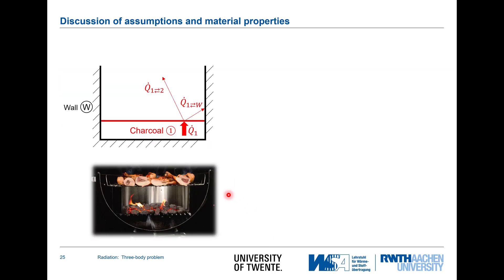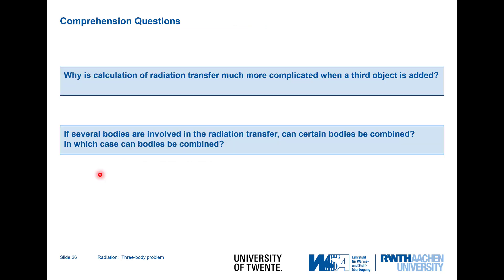The discussion of the assumptions we have taken is: what are the wall properties that are changing? Should it be more reflective? Should it be a black object? Does the surface shape play a role? I think I have discussed that and you can now understand both statements. The comprehension questions you should be able to answer are: why does the calculation of radiative transfer get so much more complicated when you just add a third object? And if you have a third object, can certain objects be combined — as I did with the wall, not considering a left or right wall but just one wall? Think about it, and also discuss the area ratio and view factors in the derived formula.